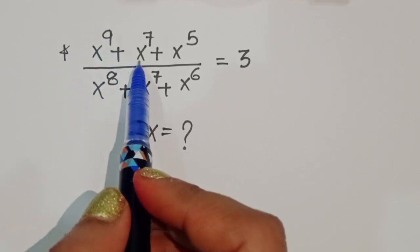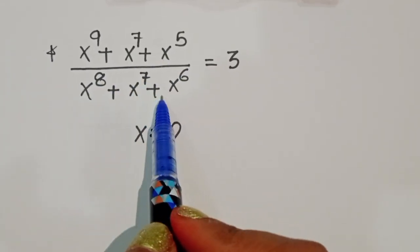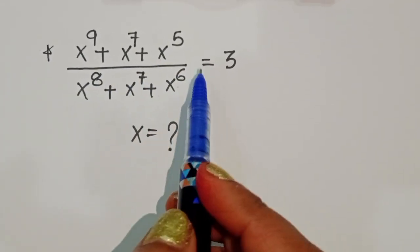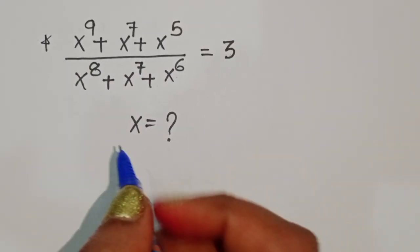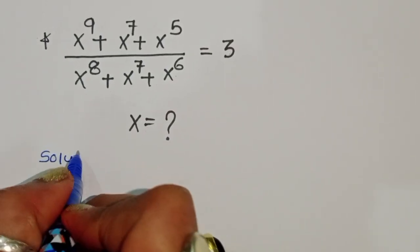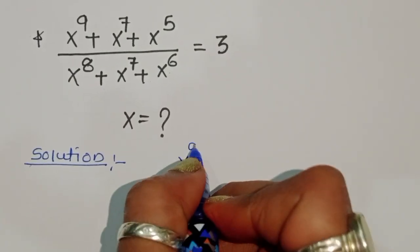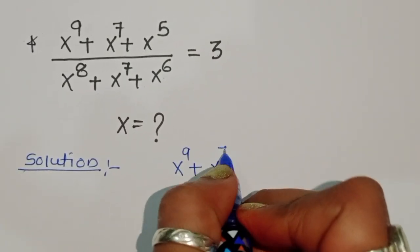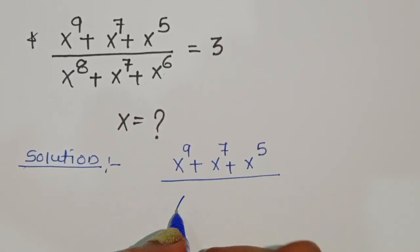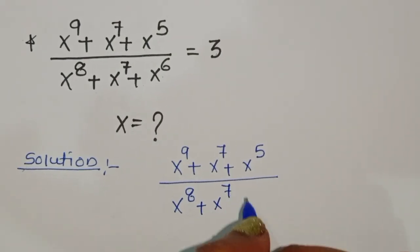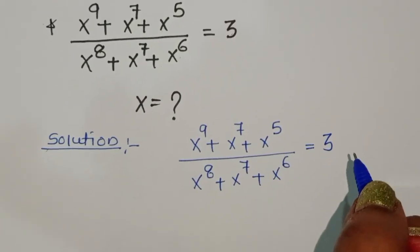We have the equation: x power 9 plus x power 7 plus x power 5, divided by x power 8 plus x power 7 plus x power 6, is equal to 3. We have to find the value of x. Let's see the solution.